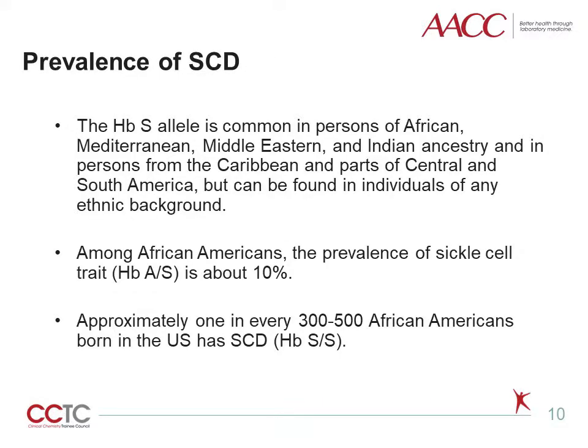Moving on to the clinical genetic aspects of sickle cell disease: the HbS variant is common in persons of African, Mediterranean, Middle Eastern, and Indian ancestry, and in persons from the Caribbean and parts of Central and South America, but can be found in individuals of any ethnic background. Among African Americans, the prevalence of sickle cell trait (HbAS) is about 10%. Approximately 1 in every 300 to 500 African Americans born in the U.S. has SCD.